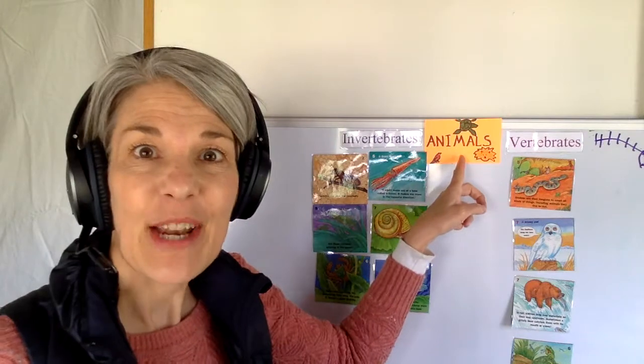Hi boys and girls, today we're going to talk some more about zoology - the study of animals. Remember, scientists love to put things into groups. We took all the things in the whole world and split them into two big groups: things that are living and things that are not living. Then we took all the living things and split them into three groups. Do you remember what the three groups were? Animals, plants, and people.